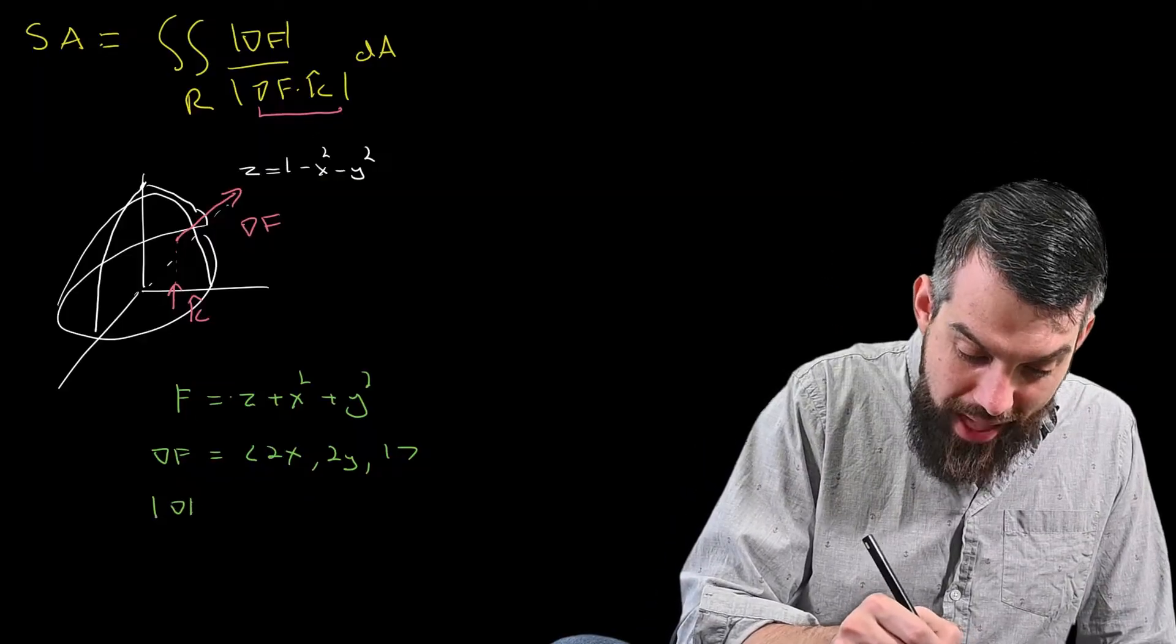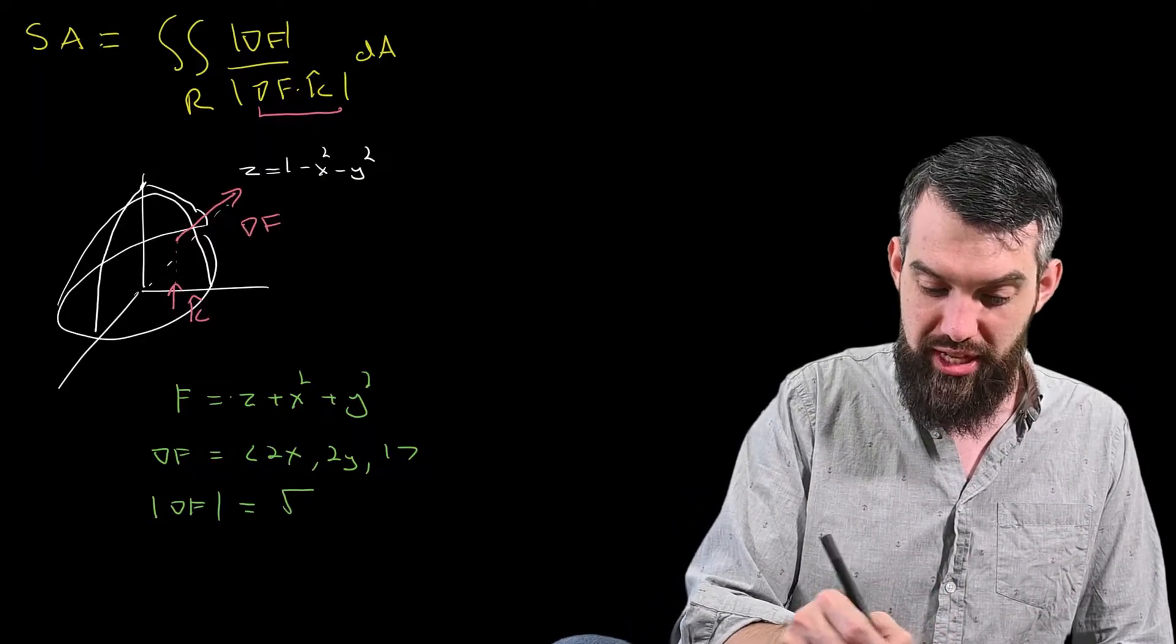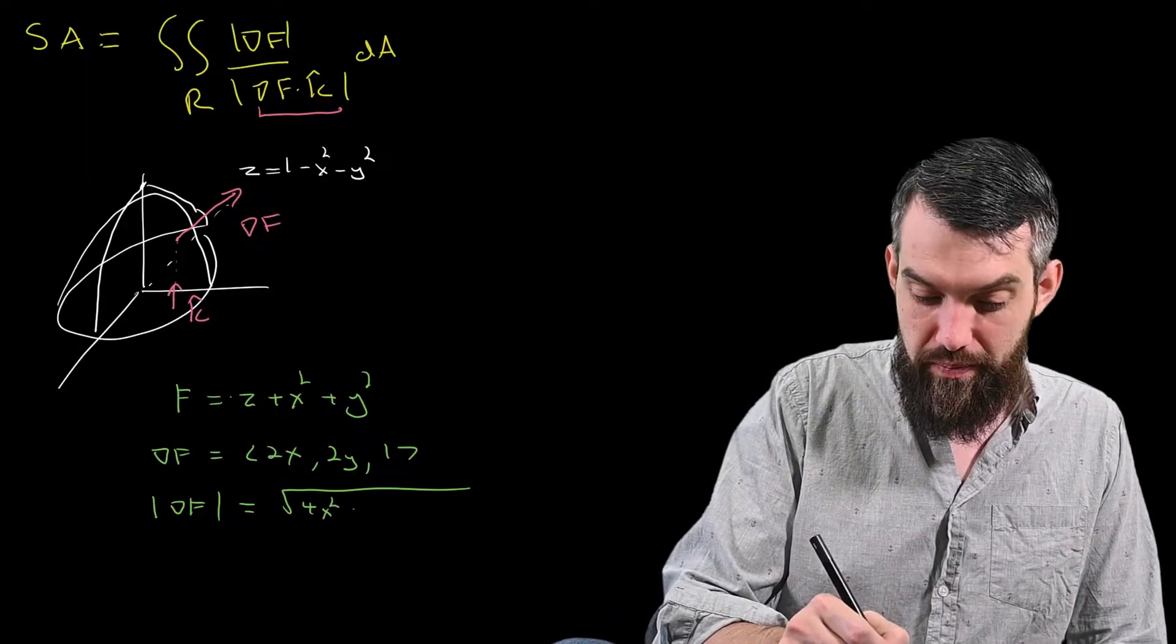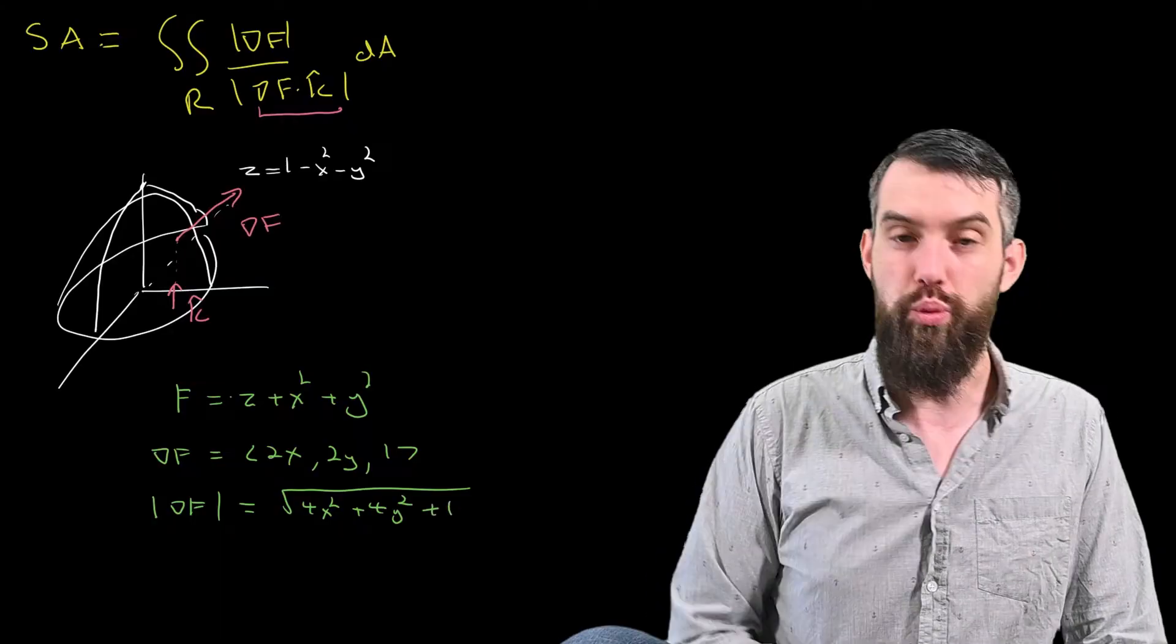Thus, the magnitude of the gradient of f is square root of the sum of the components squared. So square root of 4x squared plus 4y squared, and then finally plus 1.